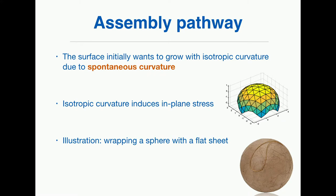Given that you have some spontaneous curvature to your surface, at the beginning of self-assembly, you expect to have some kind of isotropic growth — a kind of sphere covered by triangles. But if you do that with just triangles while preserving isotropy, the triangles that sit on the edge start to be compressed. This is exactly the same as trying to cover a sphere with a flat sheet — you will have to include some folds or wrinkles, telling you that you have too large an amount of material to cover the sphere.